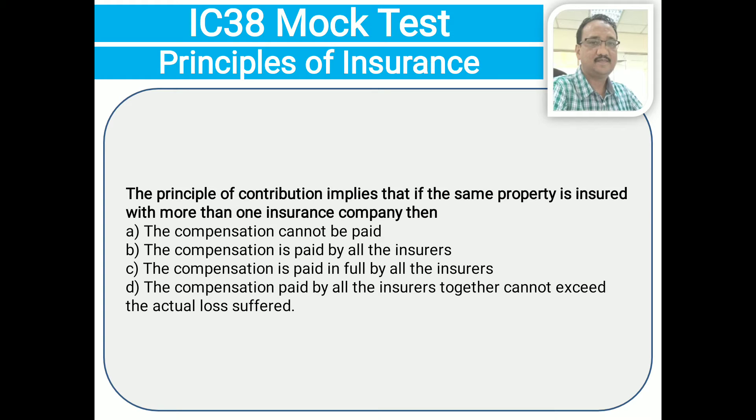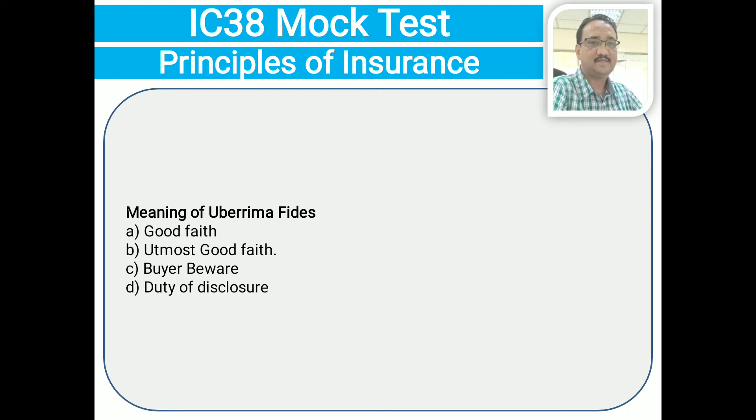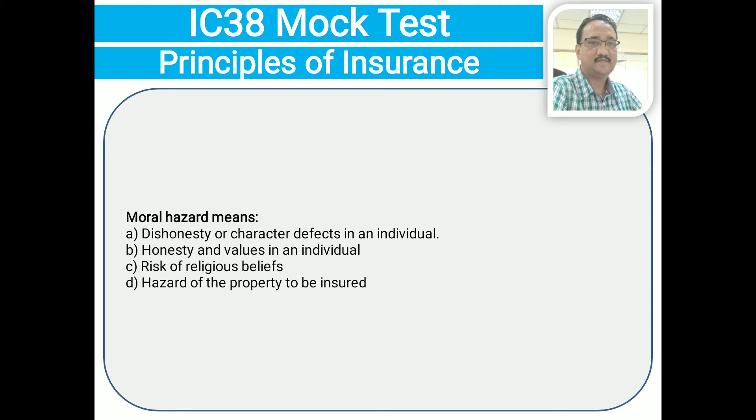The meaning of 'uberrima fides' — options: good faith; utmost good faith; buyer beware; duty of disclosure. The correct answer is B: utmost good faith. Next question: moral hazard means — dishonesty or character defects in an individual; honesty and values in an individual; risk of religious beliefs; hazard of the property to be insured. The correct answer is A: dishonesty or character defects in an individual.